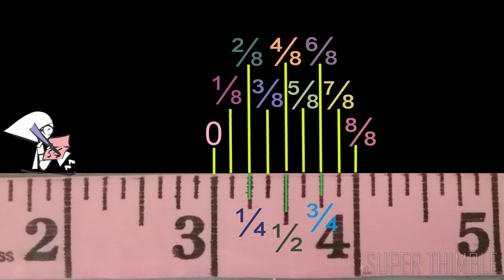It is as simple as that. If the division between the two numbers is more than 8, the fraction becomes of that number. For example, if the lines between two inches are 16, then each line becomes 1/16, 2/16, and so forth.